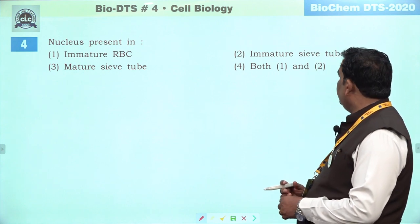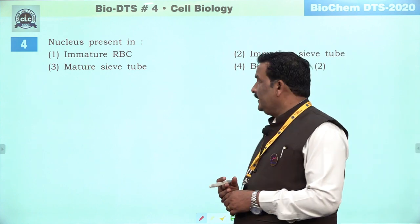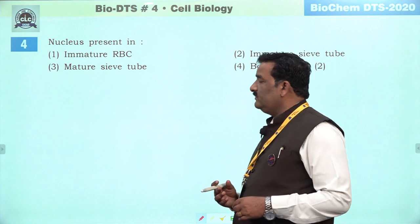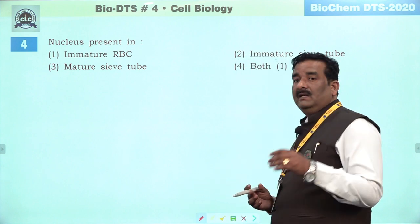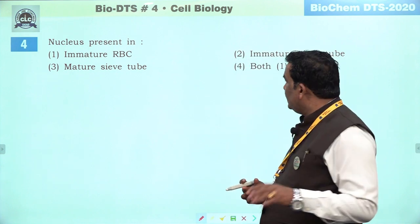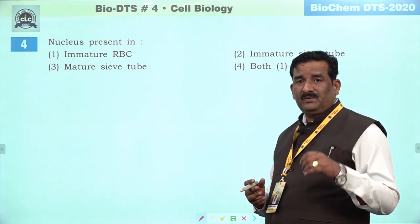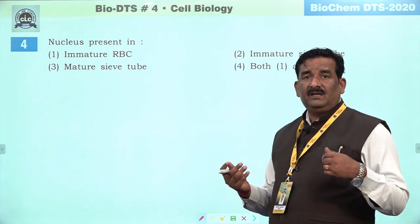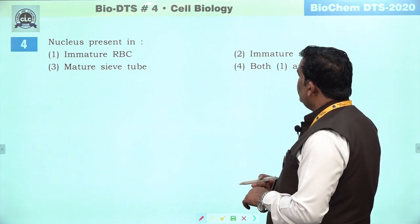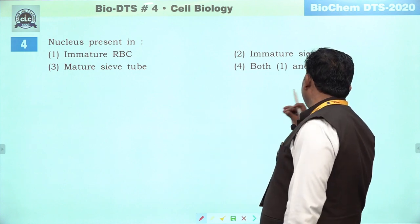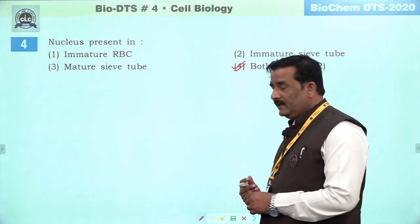Next question: nucleus presence in. Immature form mein RBC mein — jaise fibroblast cell hoti hai, wahin se kuch jo cells banti hain, un mein nucleus ki presence paai jaati hai. Lekin jab erythrocyte banti hai, to nucleus disappear ho jaata hai. Isi tarikay se immature sieve tube mein initial stage par nucleus hai, but at maturity they release or degrade their nucleus. Iska matlab hai ki nucleus ki jo presence paai jayegi woh immature RBC and immature sieve tube — donon mein paai jayegi. Hamara fourth answer sahi maana jayega.